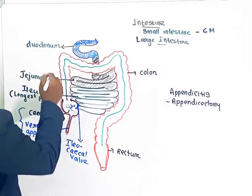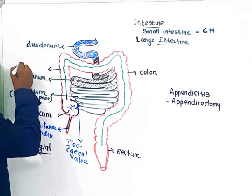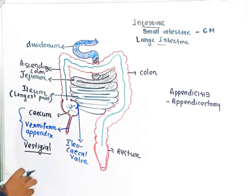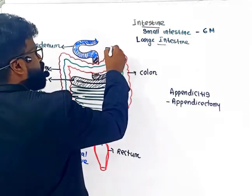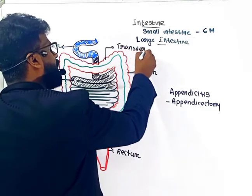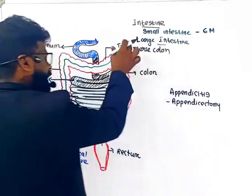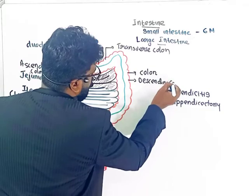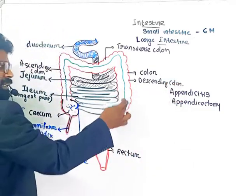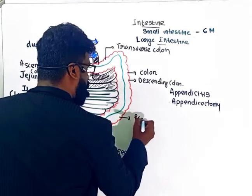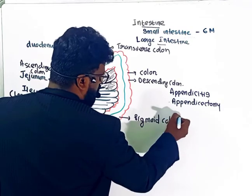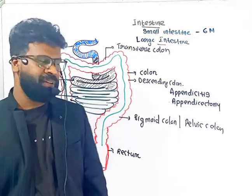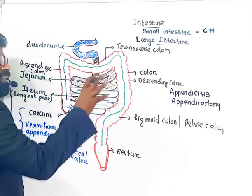The four regions of the colon are: ascending colon, transverse colon, descending colon, and the sigmoid colon — also called the pelvic colon. The sigmoid or pelvic colon then opens into the rectum.